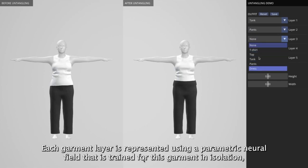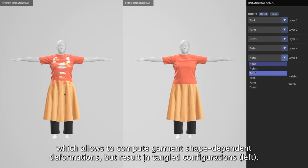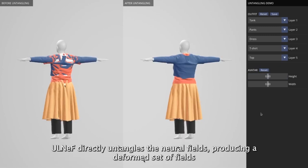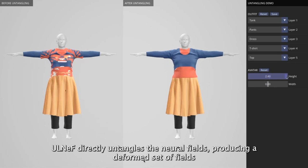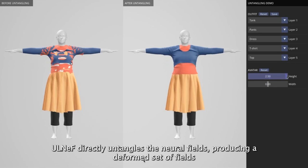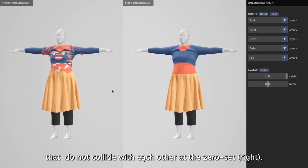Each garment layer is represented using a parametric neural field that is trained for this garment in isolation, which allows to compute garment shape-dependent deformation but results in tangled configurations. Our model directly untangles the neural fields, producing a deformed set of fields with elements that do not collide with each other at the zero set.